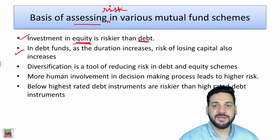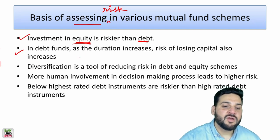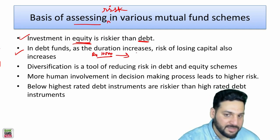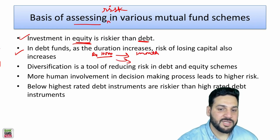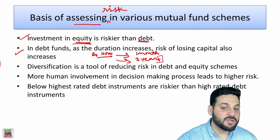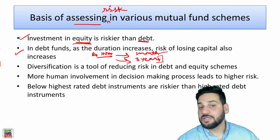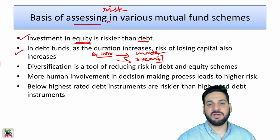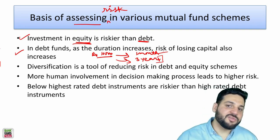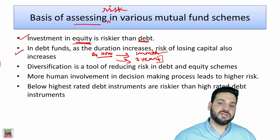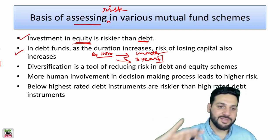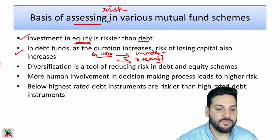Second: in debt schemes, as the duration increases, the risk of losing capital also increases. For example, if you lend someone ₹10,000 and they say they'll return it in one month versus three years, there's a higher probability of repayment in one month. Financial conditions can change over three, five, or seven years, so longer duration means higher risk.